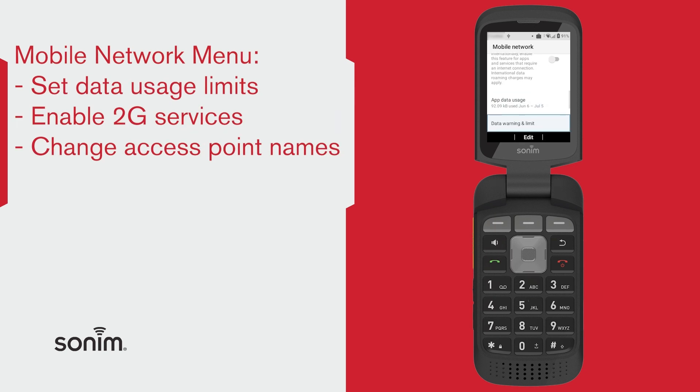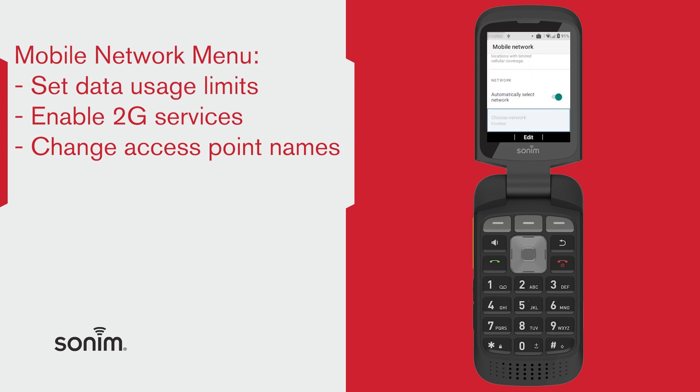Next, you can set the data usage limit and enable 2G service. And last, you can choose what network to automatically connect to and configure network access point names.